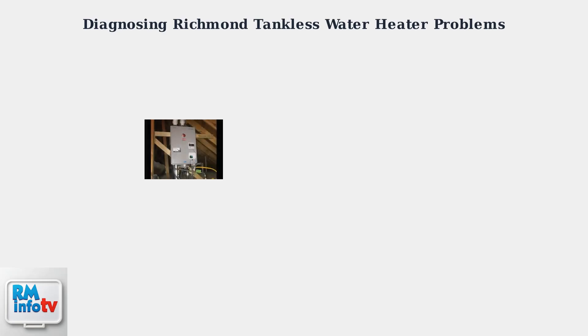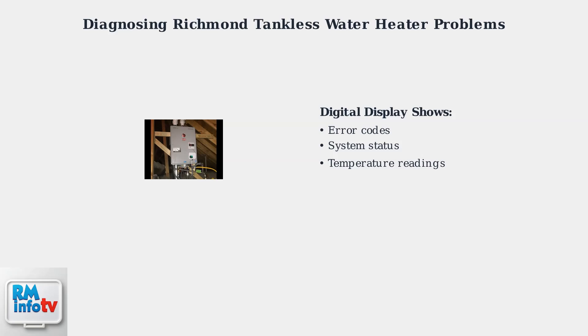The first step in diagnosing any problem is to check the digital display on your Richmond tankless water heater. This display provides crucial information including error codes, system status, and temperature readings.